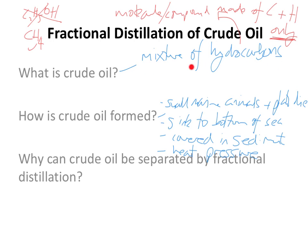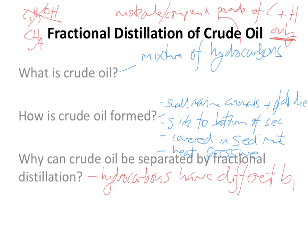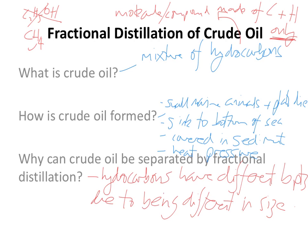Crude oil is a mixture of different sized hydrocarbons. Because the hydrocarbons are of different sizes, they're going to have different boiling points. So that's the answer to the third question: why can crude oil be separated by fractional distillation? It's because the hydrocarbons in crude oil have different boiling points, due to being different in size. Within that mixture of crude oil, you've got some quite long hydrocarbons and also short hydrocarbons.